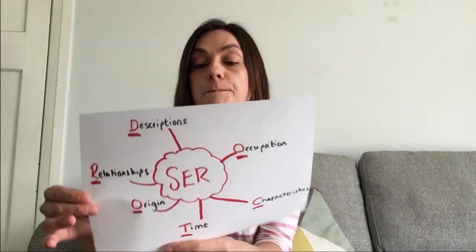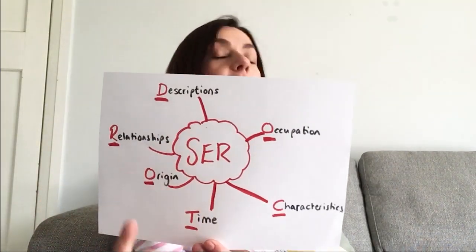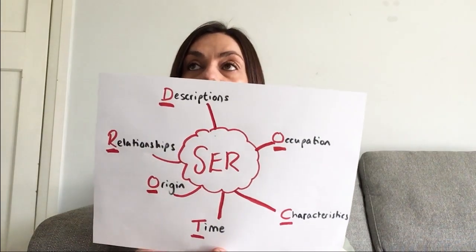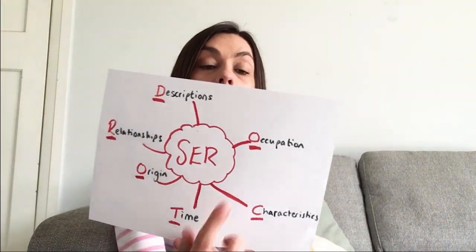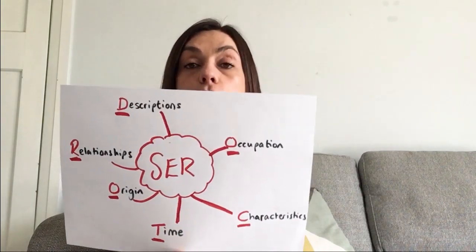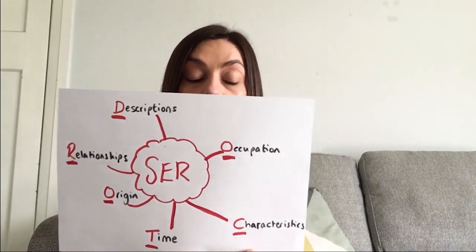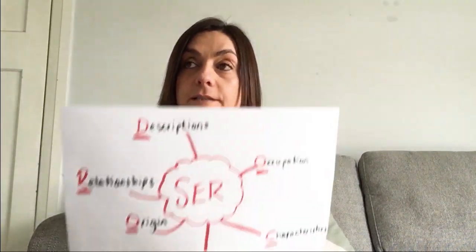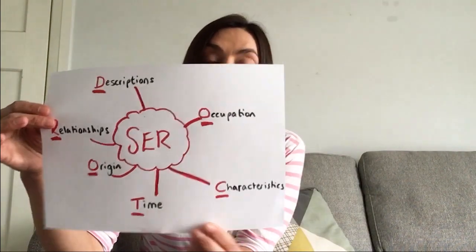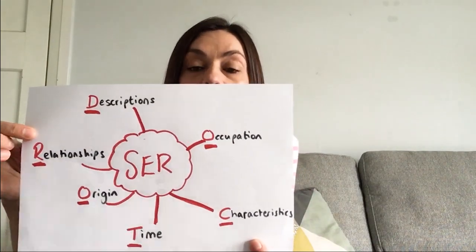So first we're going to start with ser. Ser is used to describe the following things: descriptions — to describe somebody, for example 'he is tall' or 'the house is big.' Occupation — so your job, like 'I'm a student' or 'I'm a teacher.' Characteristics — describing someone's innate personality, the sort of person that they are, so 'he is kind' or 'she is funny.'